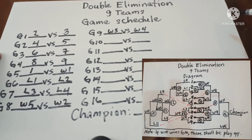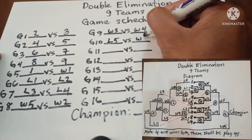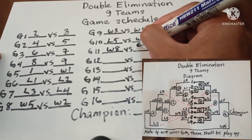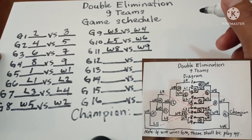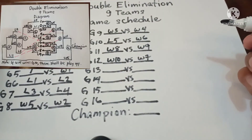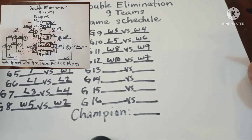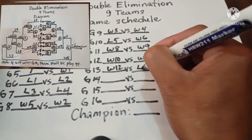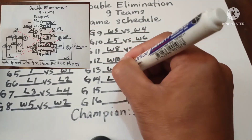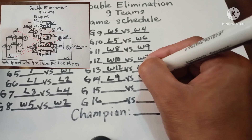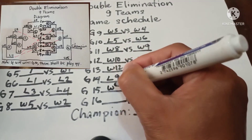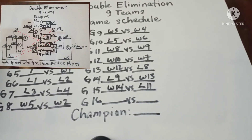Continuing the game schedule: Game 10 — Loser 5 vs Winner 6; Game 11 — Winner 8 vs Winner 9; Game 12 — Winner 10 vs Winner 7; Game 13 — Winner 12 vs Loser 8; Game 14 — Loser 9 vs Winner 13; Game 15 — Winner 14 vs Loser 11.